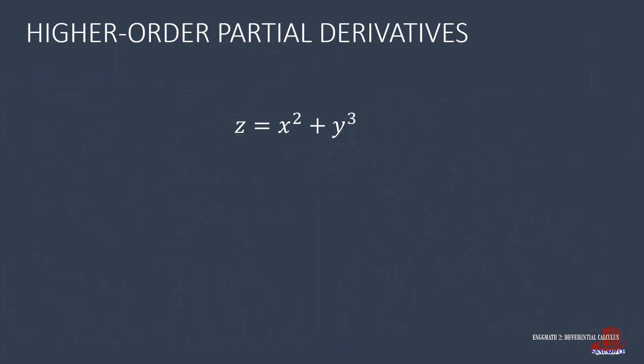Using the same equation from our introductory concepts, z is equal to x squared plus y cubed. We have the two partial derivatives arising from the variables x and y. From the partial derivative of z with respect to x, we have the second-order derivatives: the second partial derivative of z with respect to x, and the second partial derivative of z with respect to x and y.